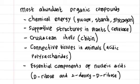Carbohydrates are the most abundant organic compounds in the plant world. They provide chemical energy such as glucose, starch, and glycogen.